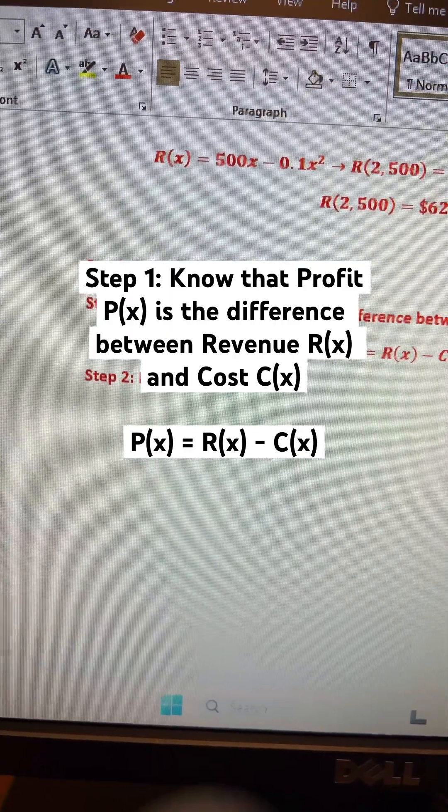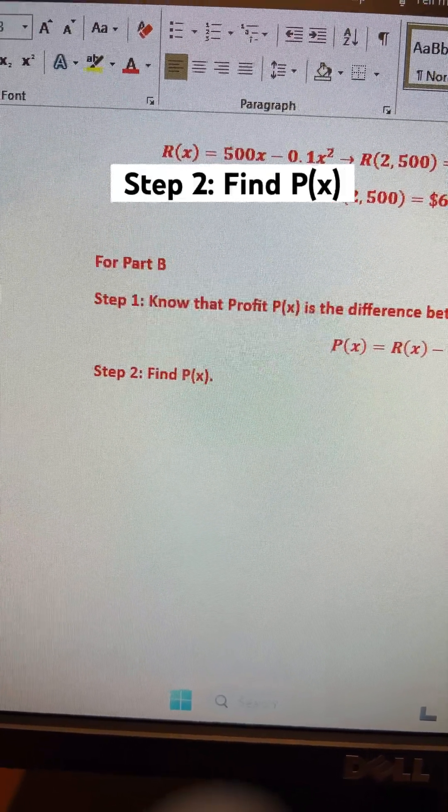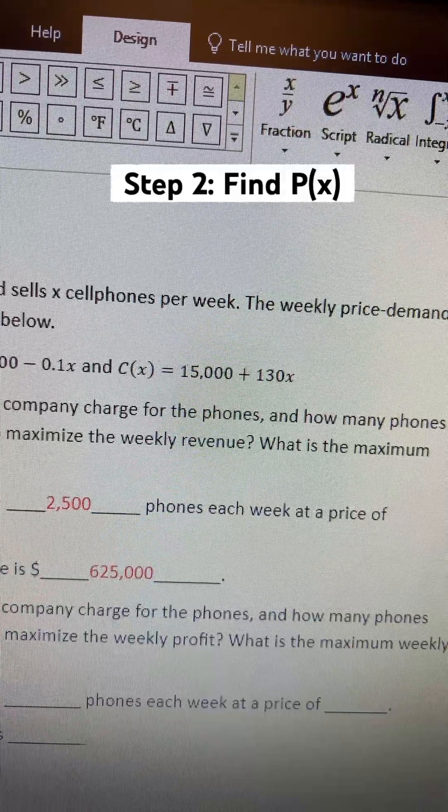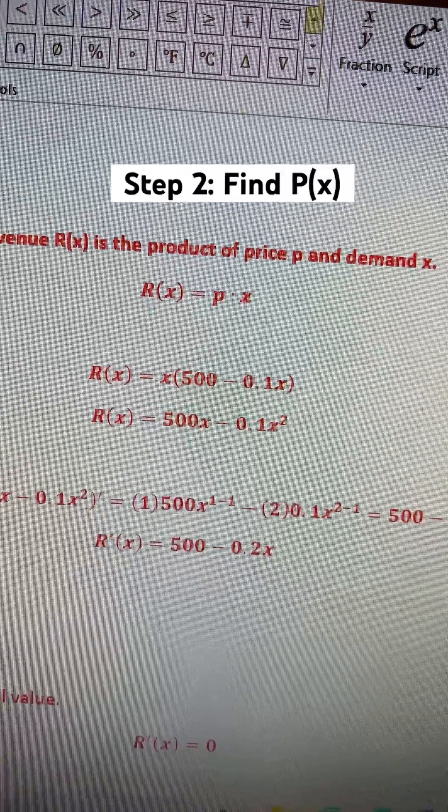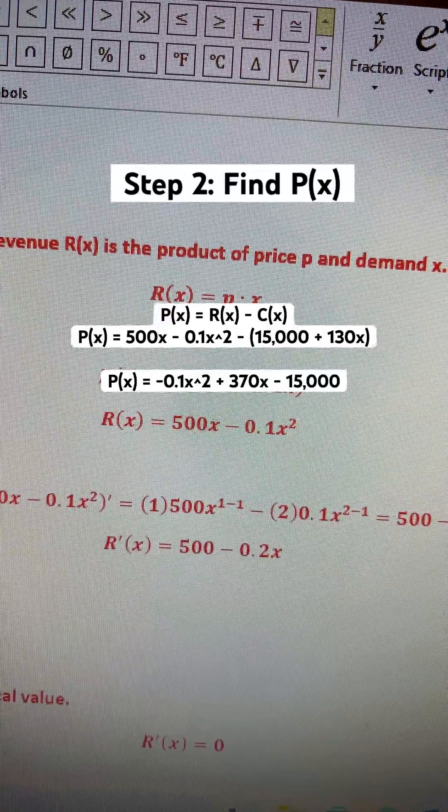And now that you know that, step 2 is to find P(x). Our cost function is 15,000 plus 130x. And our revenue function is 500x minus 0.1x squared.